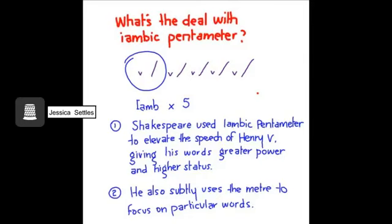Iambic pentameter is a type of meter. Shakespeare used it, and it must have taken him forever. He literally went through each line of poetry and made sure that there were five stressed and five unstressed word parts in each line. This made characters sound as though their voices were more sing-songy and upbeat. This is an example of the difference between stressed and unstressed syllables.